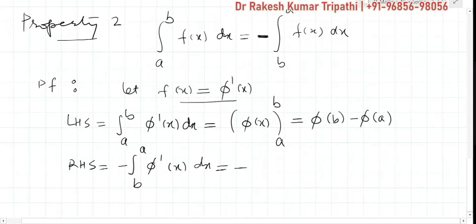Again, the same concept: differentiation of φ(x) is φ'(x), and then we are integrating. So both integration and differentiation will cancel each other's effect, and the outcome will be φ(x). Lower limit b, upper limit a.